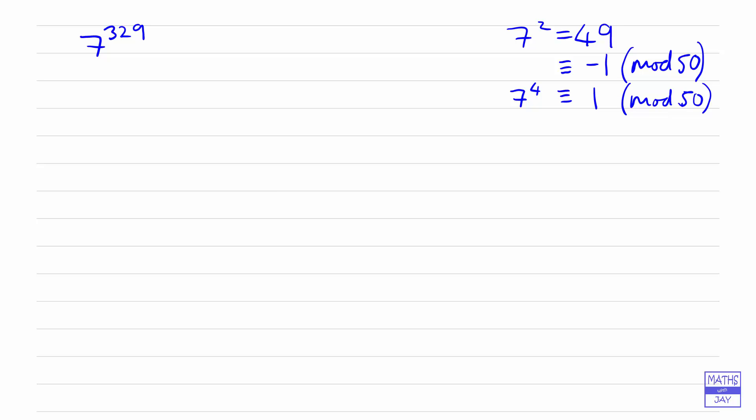Right, so what we want to do with this example, if you've already tried you'll see that 7 to the power of 329 is probably far too big to evaluate on your calculator. So what we're going to do here is look at writing the 329 in terms of 4 so that we can use 7 to the power of 4 being congruent to 1. So we can say that 7 to the power of 329 is equal to 7 to the power of 4 times 82 plus 1.